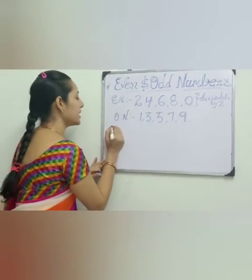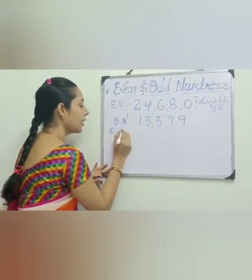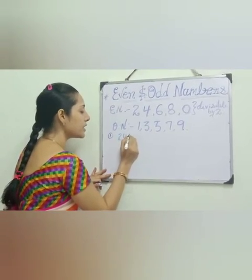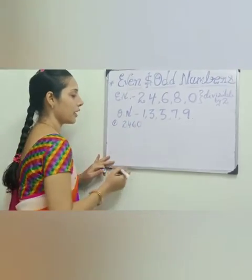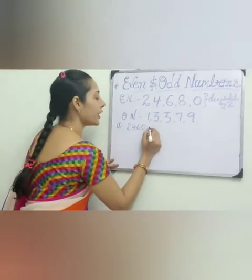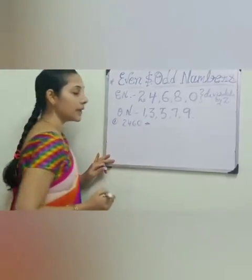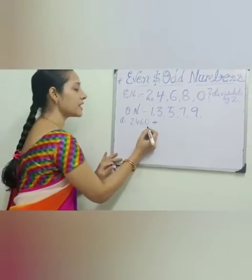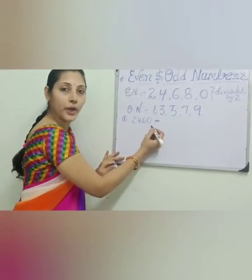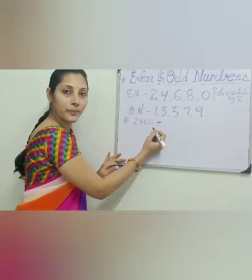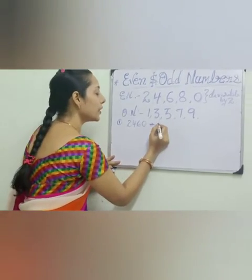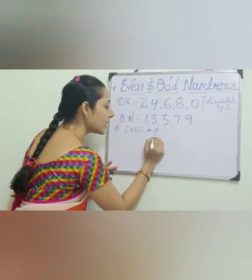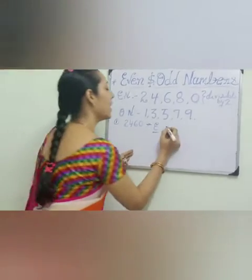Now let's read out. Look at this number: 2, 4, 6, 0. So what is this number? Is it odd or even? Very good. This is an even number.